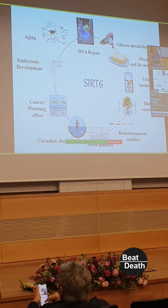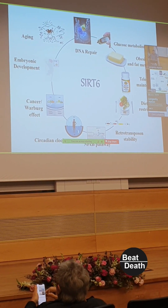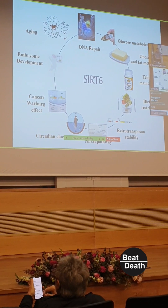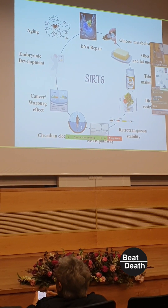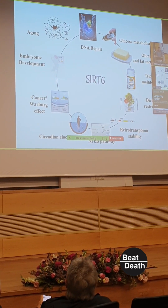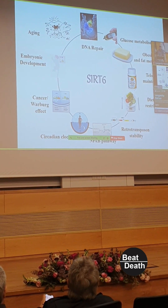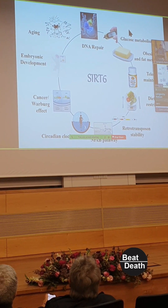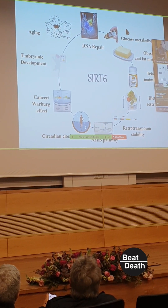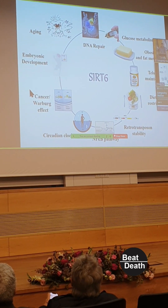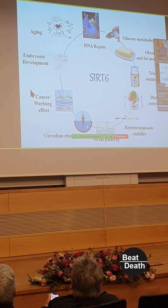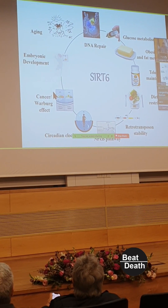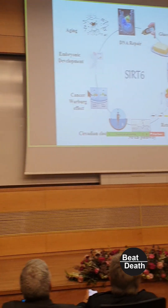SIRT6 is involved in many activities within cells, many of which I'm going to show you. For example, it's involved in DNA repair, in glucose metabolism, and by regulating glucose metabolism it prevents or blocks cancer — it acts as a tumor suppressor through a blocking effect.